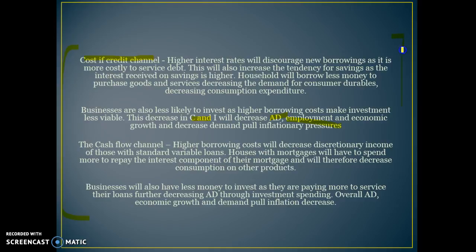You need to make links to the incentive for businesses and consumers to take out loans for full marks. It's really two marks for linking it to consumption spending through reluctance to borrow and the tendency to save more, and through investment spending slowing down because businesses don't want to borrow.